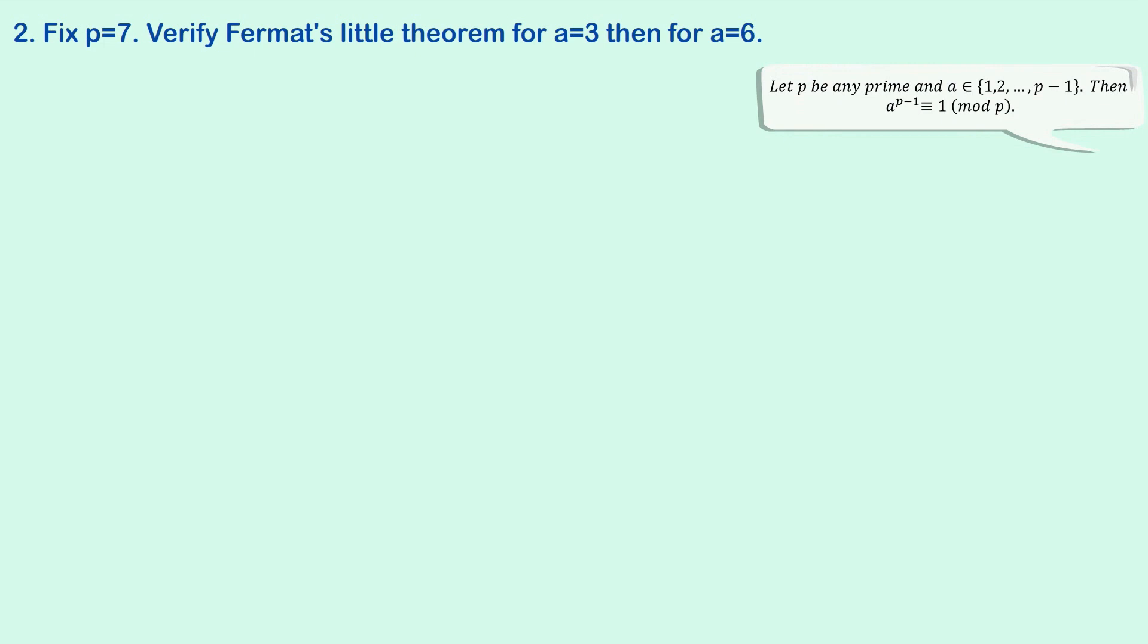So it's just a question of putting in these numbers. So we have, well, a equals 3 to start with. So we'll have 3 to the p minus 1 and p minus 1 is 6. So 3 to the 6 is actually equal or congruent to 729. And that's congruent to 1 mod 7. In other words, the remainder when we divide 729 by 7 is 1.